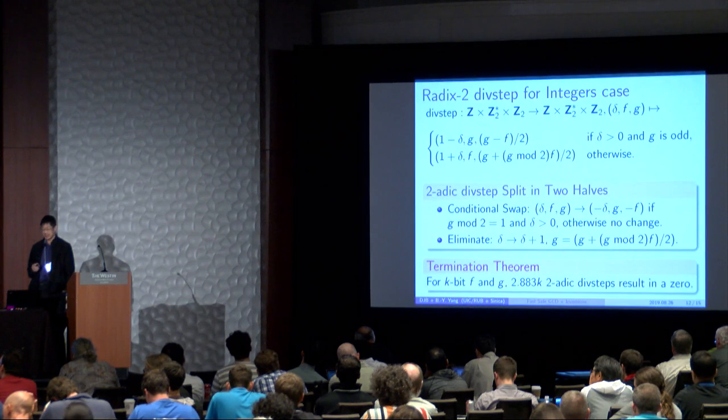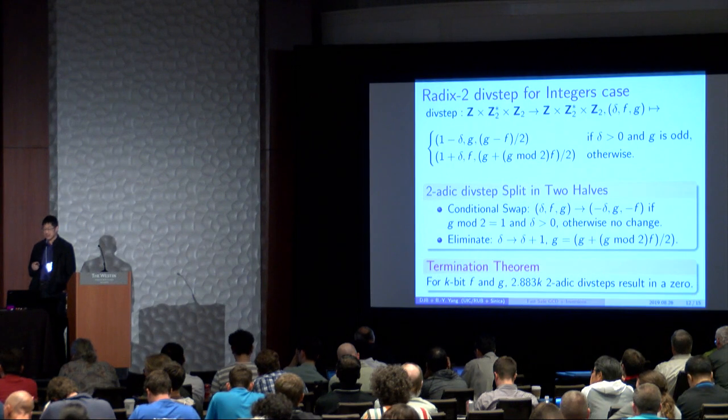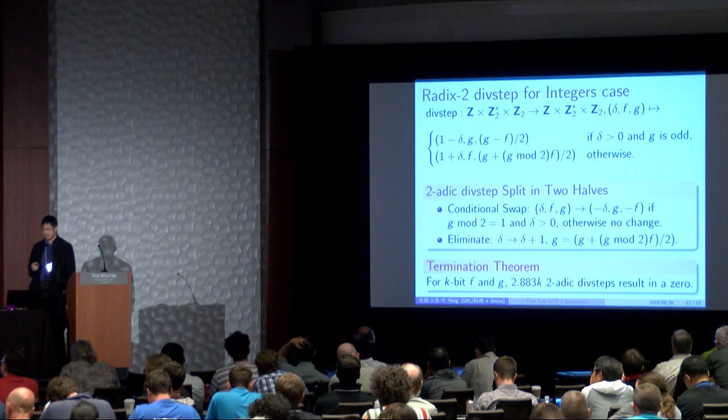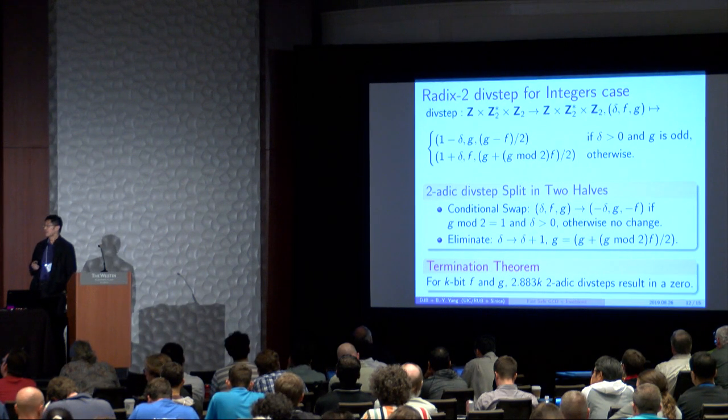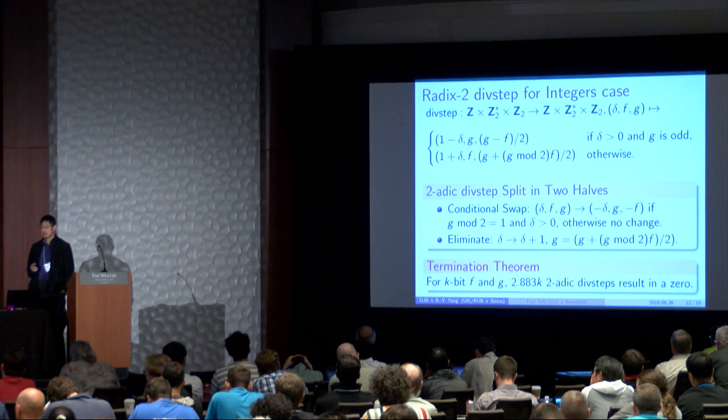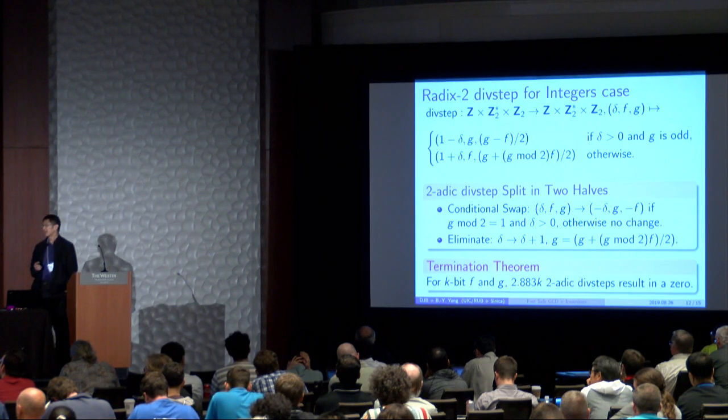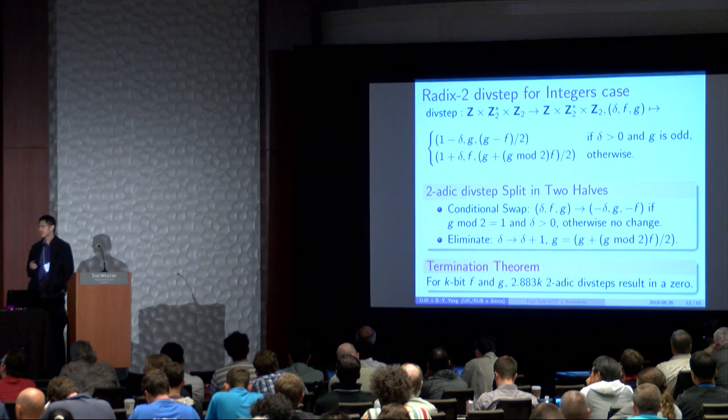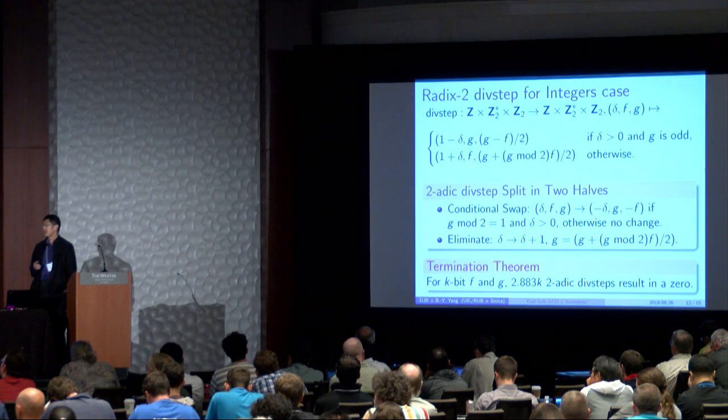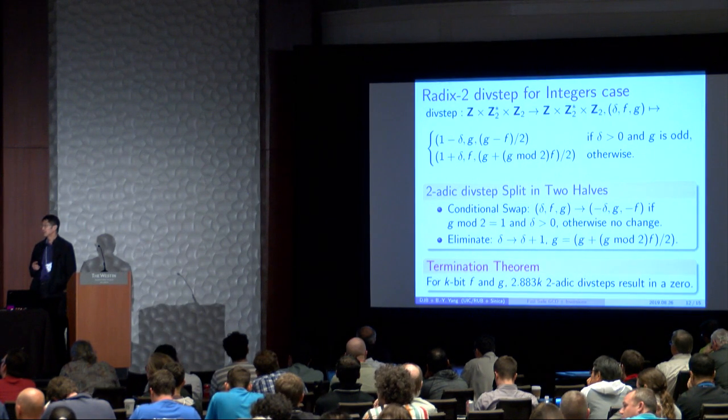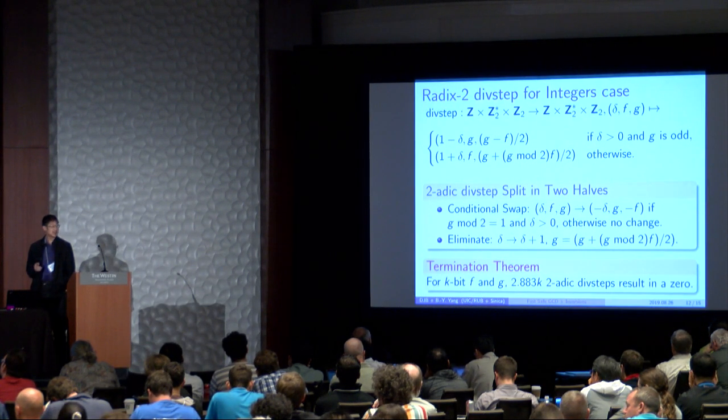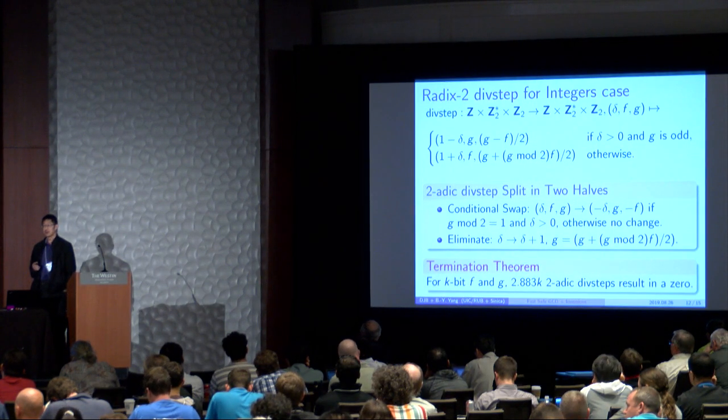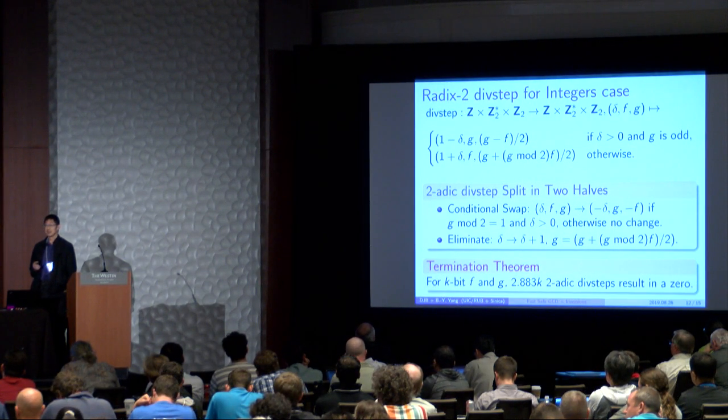And then, for the next half, we eliminate. So we increment delta, and we make G, G plus F times G mod 2 over 2. We have a termination theorem which says that if F and G are k-bit, all that's needed is 2.883 k two-adic divsteps, and we will see a zero. And at this point, we will have the GCD, and we can compute the modular inverse.